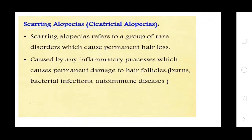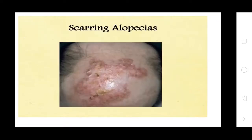Scarring alopecias refer to a group of rare disorders which cause permanent hair loss. They are caused by any inflammatory process which causes permanent damage to hair follicles — including burns, bacterial infection, and autoimmune disease. This disease affects the scalp.